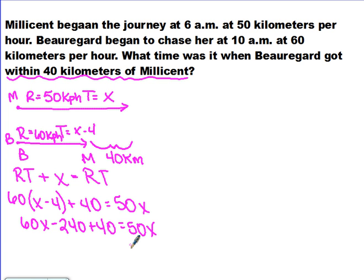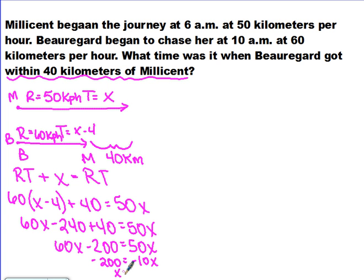Combining like terms gives us 60x − 200 = 50x. Subtracting 60x from both sides: −200 = −10x, so x = 20. Since x is Millicent's travel time, she traveled 20 hours. Beauregard's time is x minus 4, which equals 16 hours. We now know the rates and times for both.